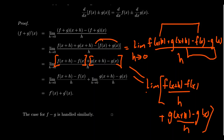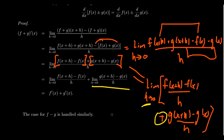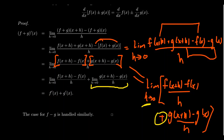These two fractions are themselves difference quotients. By limit properties, we can break the limit of a sum into a sum of limits. We get the limit as h approaches zero of f of x plus h minus f of x over h, plus the limit as h approaches zero of g of x plus h minus g of x over h. The first limit is just f prime of x, and the second is g prime of x — so the derivative of the sum is the sum of the derivatives.